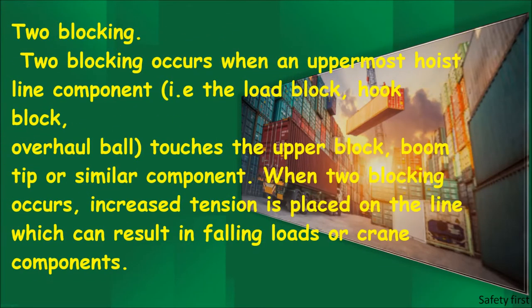2-Blocking occurs when an uppermost hoist line component — i.e., the load block, hook block, or overhaul ball — touches the upper block, boom tip, or similar component. When 2-blocking occurs, increased tension is placed on the line, which can result in falling loads or crane components.